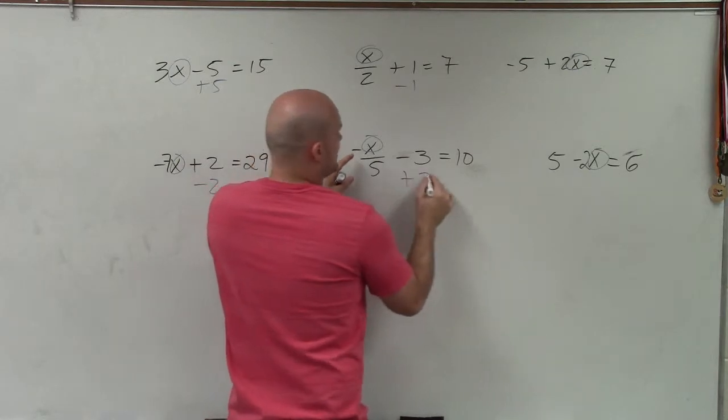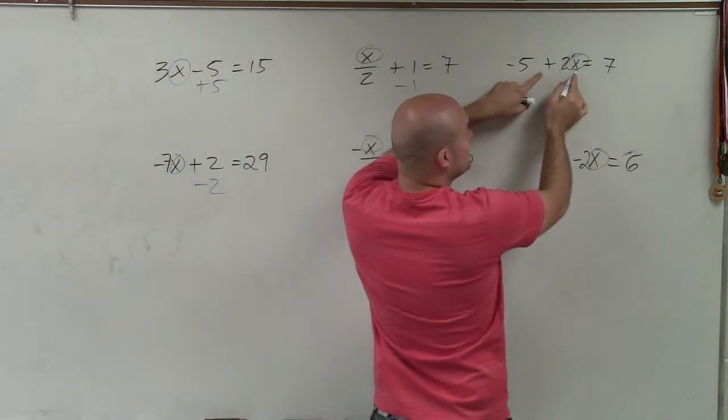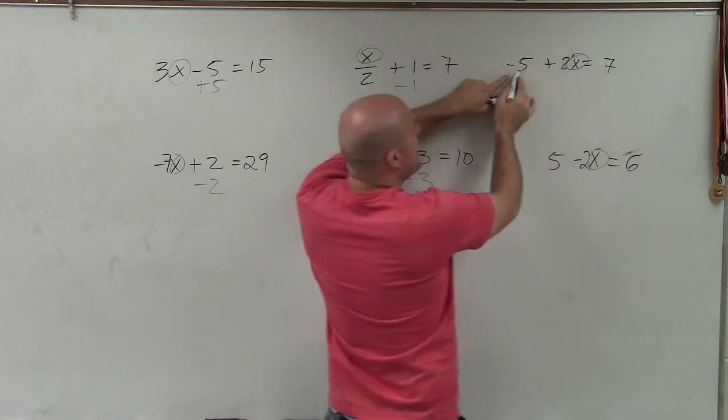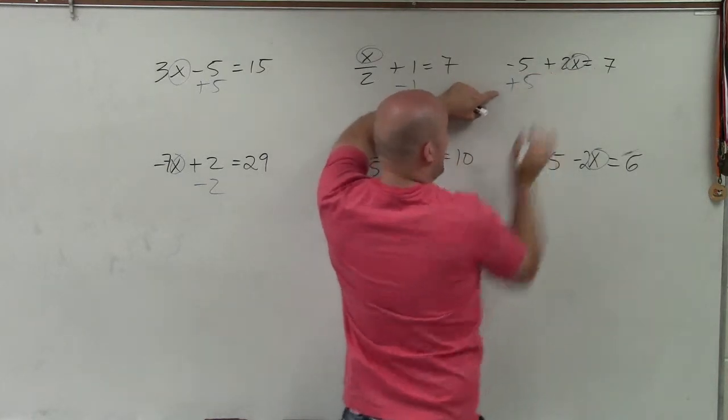Here, my x is being subtracted by 3, so I add. Here, it's kind of confusing. This is a positive 2x, but I'm subtracting a 5, because that's a negative 5, so I'm going to add.